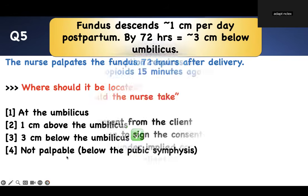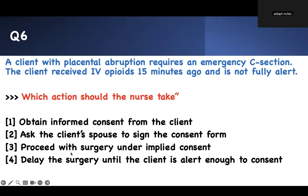Number six. A client with placenta abruption requires an emergency C-section. The client just received an opiate and is not fully alert. What action should the nurse take? Options: obtain informed consent from the client; ask the client's spouse to sign the consent; proceed with surgery under implied consent; or delay the surgery until the client is alert enough to consent.